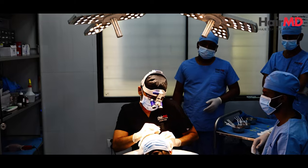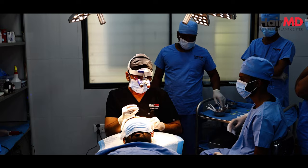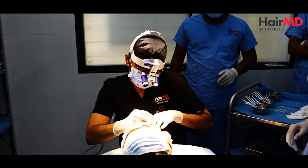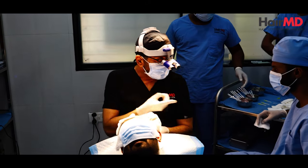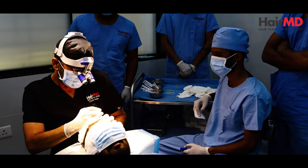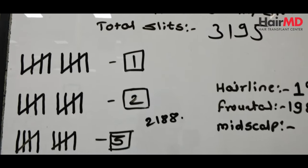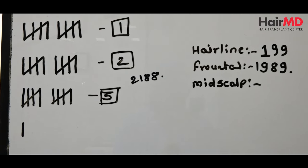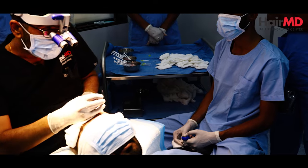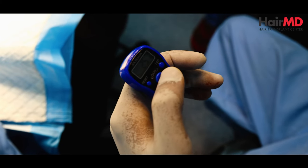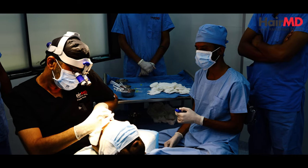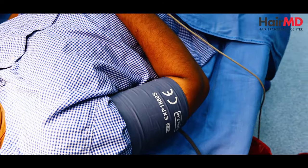I make the slits myself. While I am making slits, one assistant counts them alongside me. This is very important because we need to know exactly how many grafts we are placing. If the count is off, one area may receive too many or too few grafts. After the slits are made, we proceed to the next step.